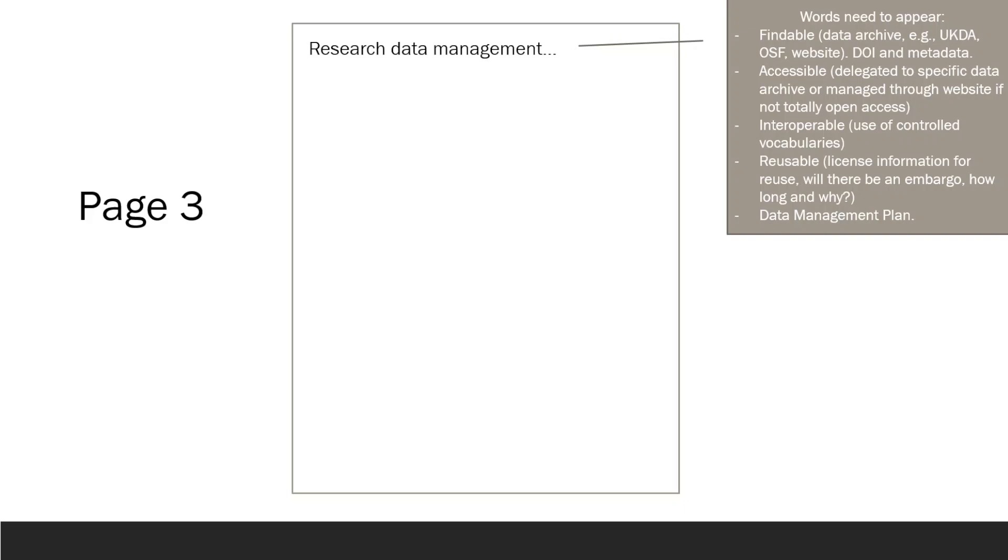In this section, be specific about how the data will be stored and where. For example, you could mention specific data archives, such as the UK Data Archive. Highlight that your data will have a digital object identifier and explain how other researchers will be able to access it. Mention the use of controlled vocabularies, if applicable, or how metadata will be created and managed. Additionally, discuss the reusability of the data, the licenses that will be applied, and whether there will be an embargo period and its duration.